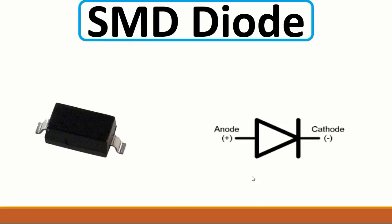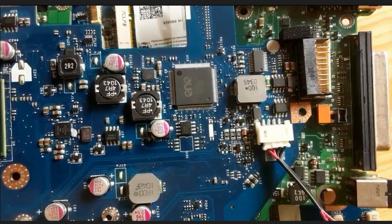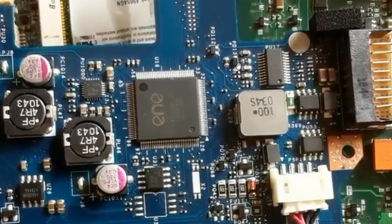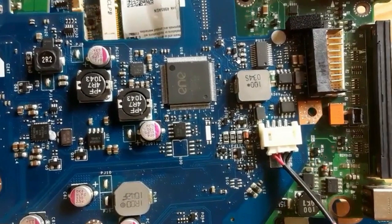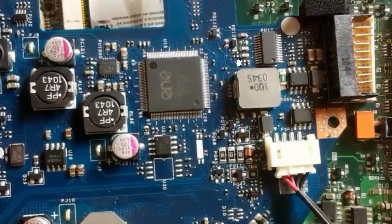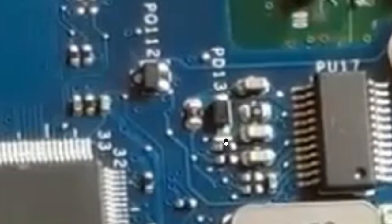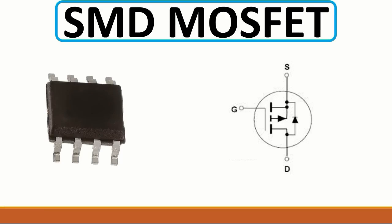SMD means surface mounted device — the component is mounted on the surface of the motherboard, not in holes. This is a diode with the anode here and the cathode here. Let's see the motherboard to find a diode. Here we have a diode — the reference is 'D' or 'PD', for example PD13. Here we have two cathodes — the white line means we have the cathode.